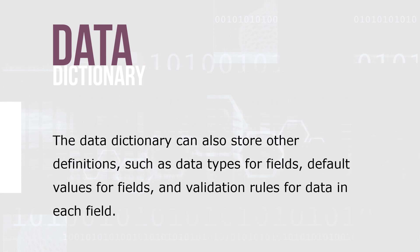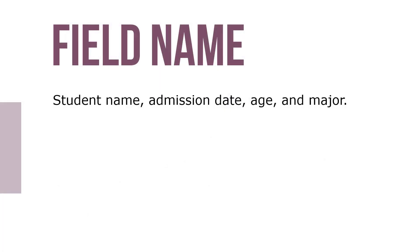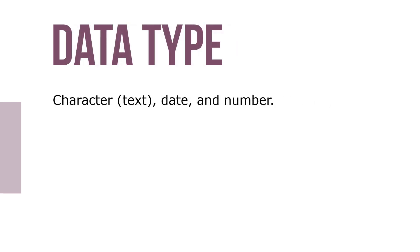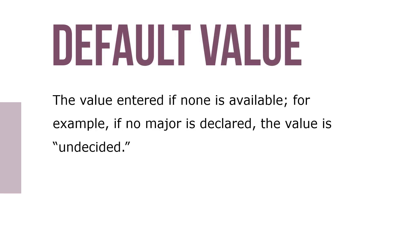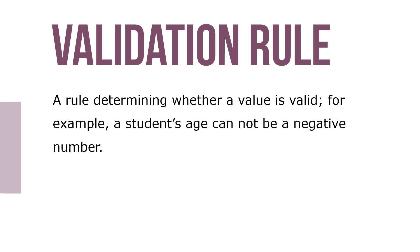The data dictionary can store definitions such as data types for fields, default values for fields, and validation rules for data in each field. Field names would be like student name, admission date, age, or major. The data type would be a character like text, a date, or a number. The default value is the value entered if none is available — for example, if no major is declared, the value is undecided. The validation rule is used for determining whether a value is valid; for example, a student's age cannot be a negative number.